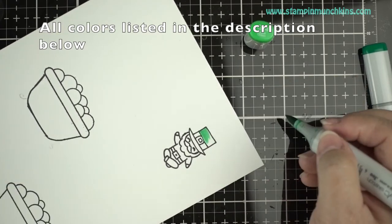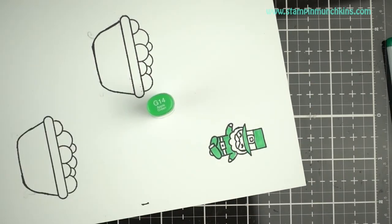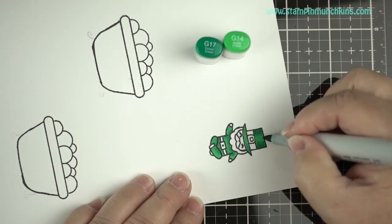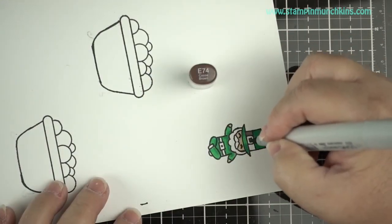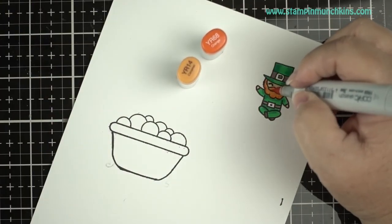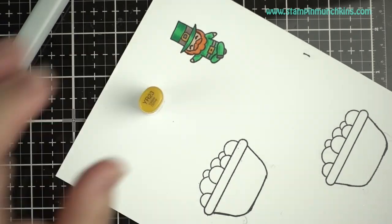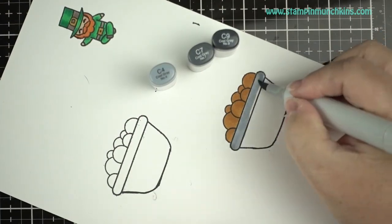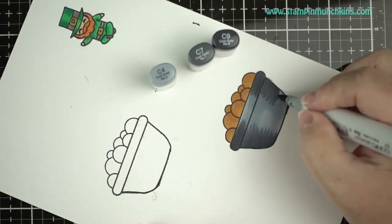So I erased my pencil marks and I'm not going to list the colors on the screen, I'll list them below, but I just did very quick Copic coloring. The leprechaun is pretty small but I just wanted to show you that if you don't have the exact stamp you need, you can alter it. I didn't ink up his hat, so I just colored him quickly to look like a red-headed bearded leprechaun.